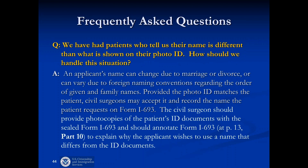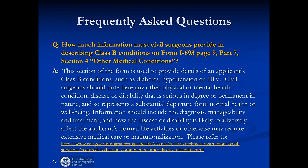You will also encounter instances of name changes — for example, the person hands you a passport in one name and now says they've gotten married or divorced. Go ahead and use whatever name the applicant refers to use. If the ID document is not consistent with the name on the form, make a notation of that explanation and the documents provided. Regarding other medical conditions: the main reason for the October revision to the form was to emphasize that civil surgeons are supposed to be completing the other medical conditions section in Part 7, Section 4 — it's important to do that and not skip over it.